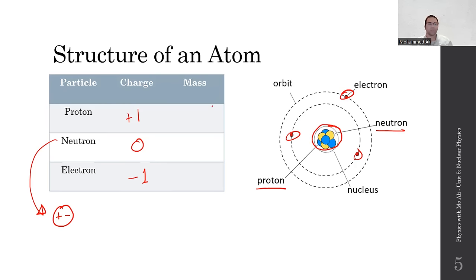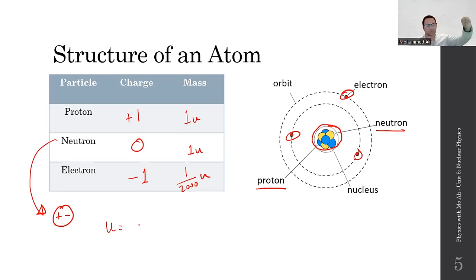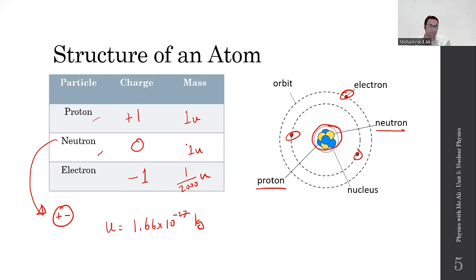The mass of a proton is 1 u and the mass of a neutron is also 1 u, so they have the same mass. An electron is 1/2000 u — about 2,000 times lighter than a proton or neutron. The value of u, the unified atomic mass constant, is approximately 1.66 × 10⁻²⁷ kg. Electrons are virtually massless but do have mass. In a regular neutral atom, the number of protons inside the nucleus equals the number of electrons in the outer shells.